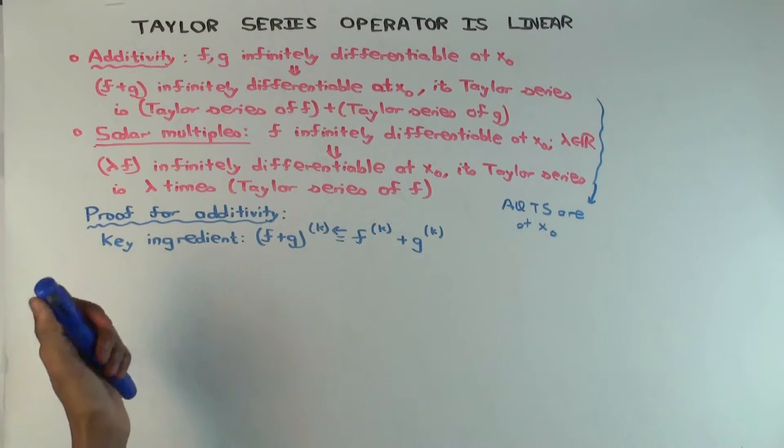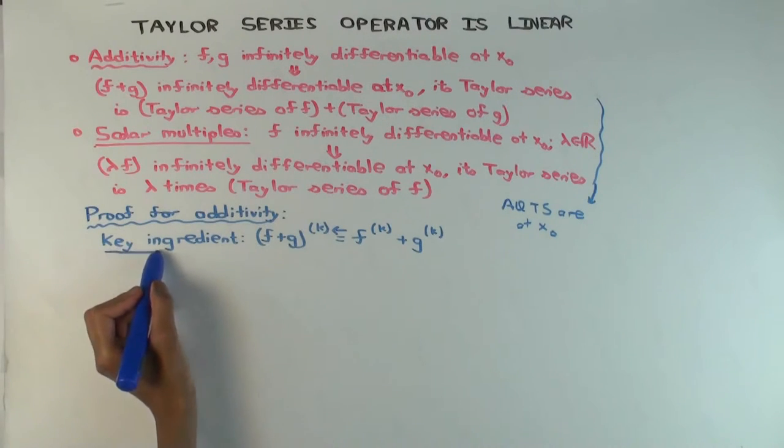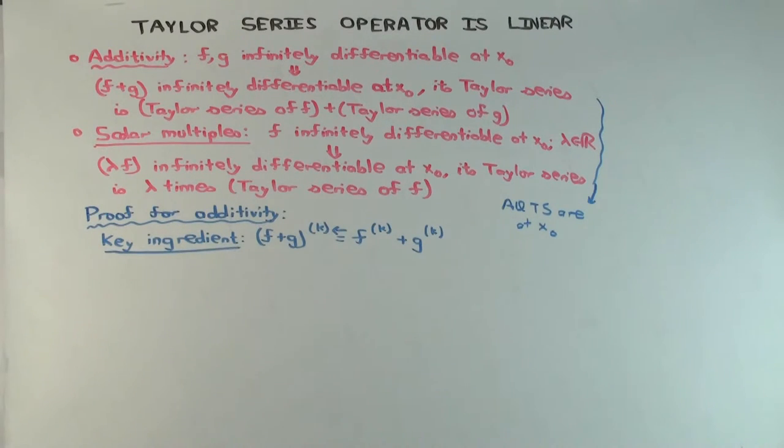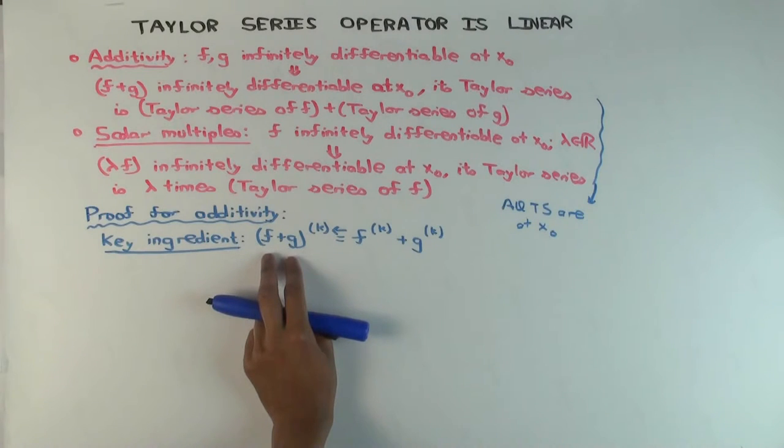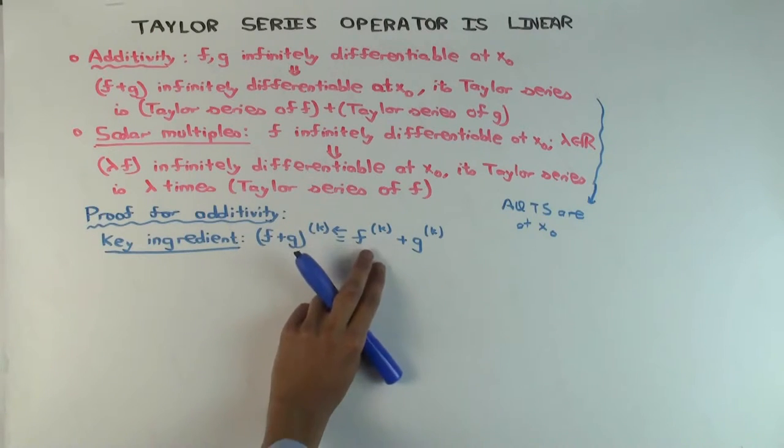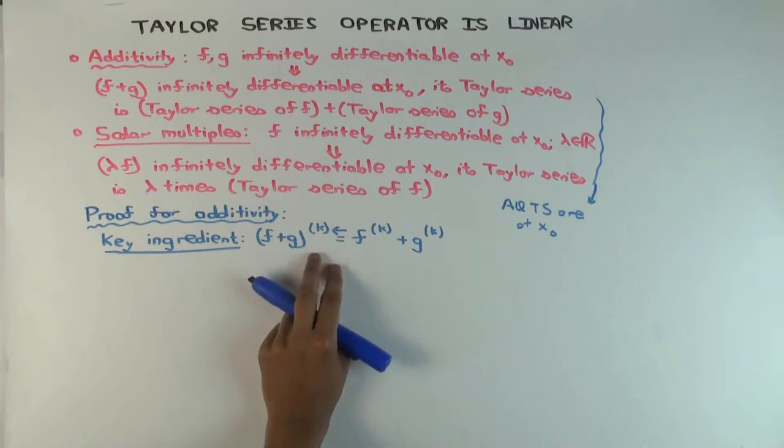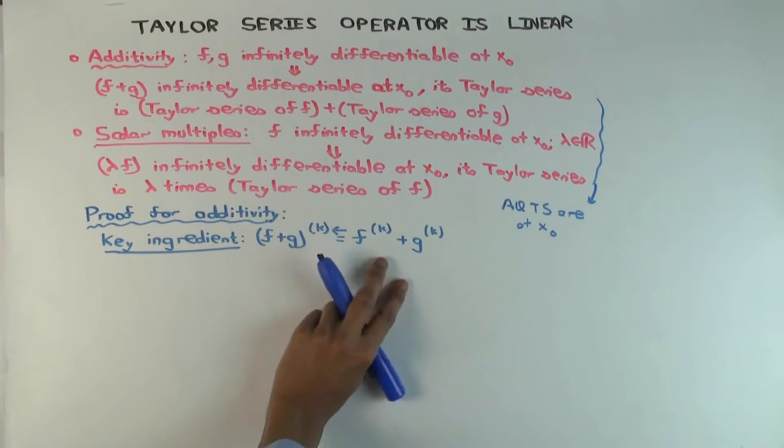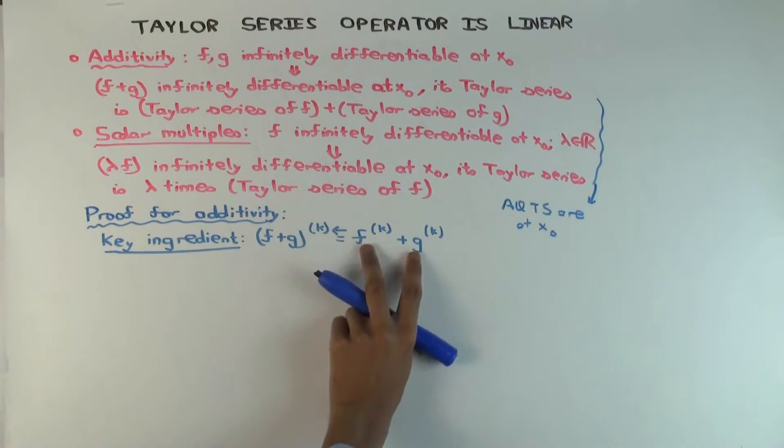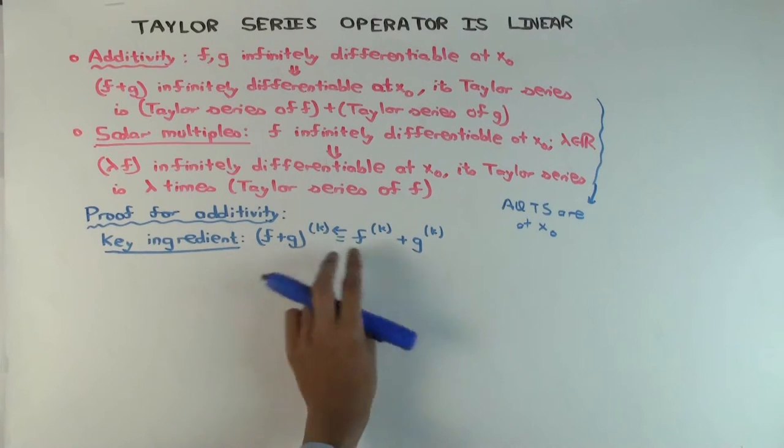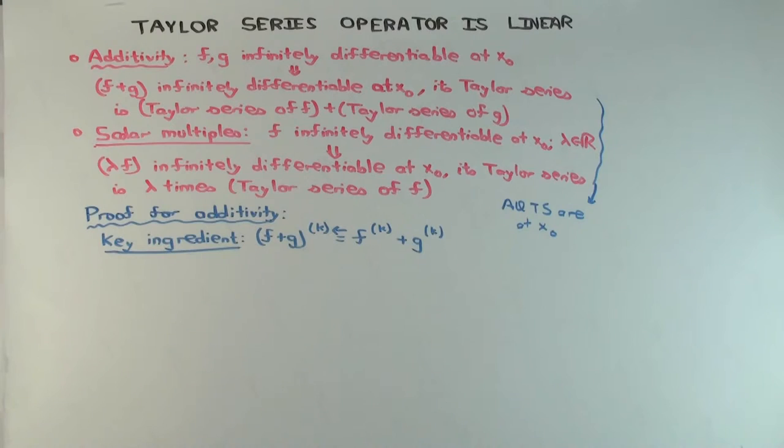Okay, now the key ingredient in the proof of this is that differentiation is linear, or rather repeated differentiation is linear. So what I mean by that is this: if I have two functions f and g, then the kth derivative of f plus g is the kth derivative of f plus the kth derivative of g. And this equality is true wherever the right side makes sense. So wherever you have a point where both of these exist, then the left side also exists and they're equal.